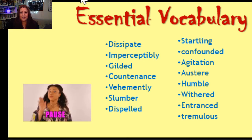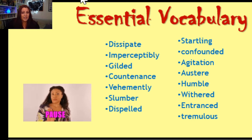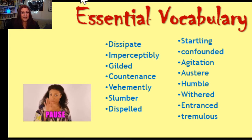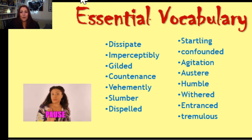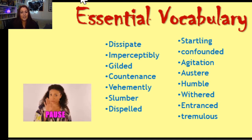I have picked out some words which come up time and time again in texts from the pre-1900s, so it's really well worth your time learning what these words mean. I'm going to ask you to pause the video and either use a dictionary at home or go onto Google and look up these words and write them down. The words are: dissipate, imperceptibly, gilded, countenance, vehemently, slumber, dispelled, startling, confounded, agitation, austere, humble, withered, entranced, and tremulous.